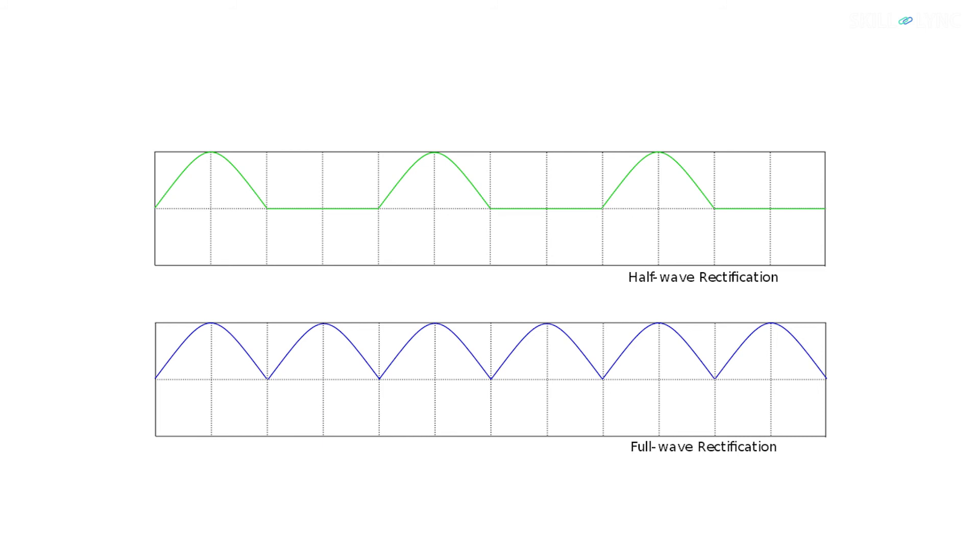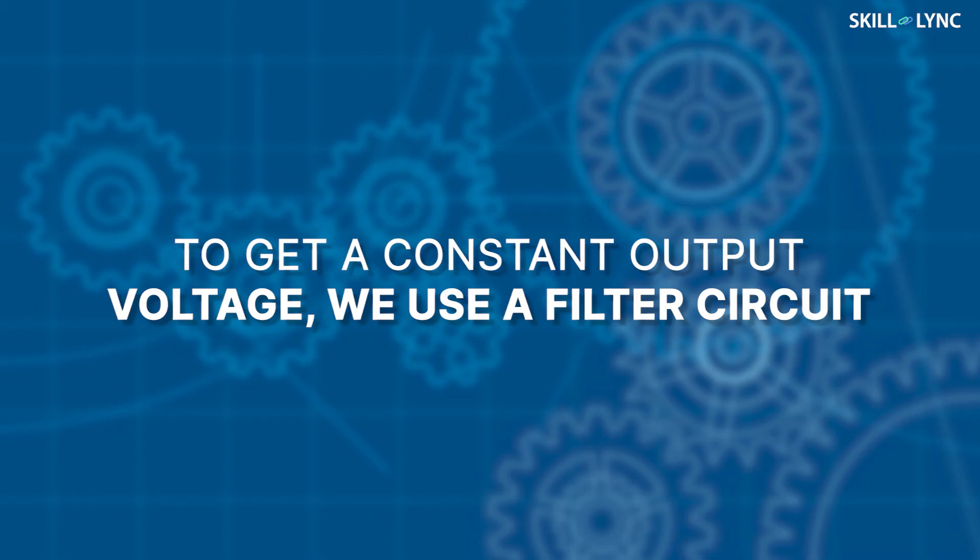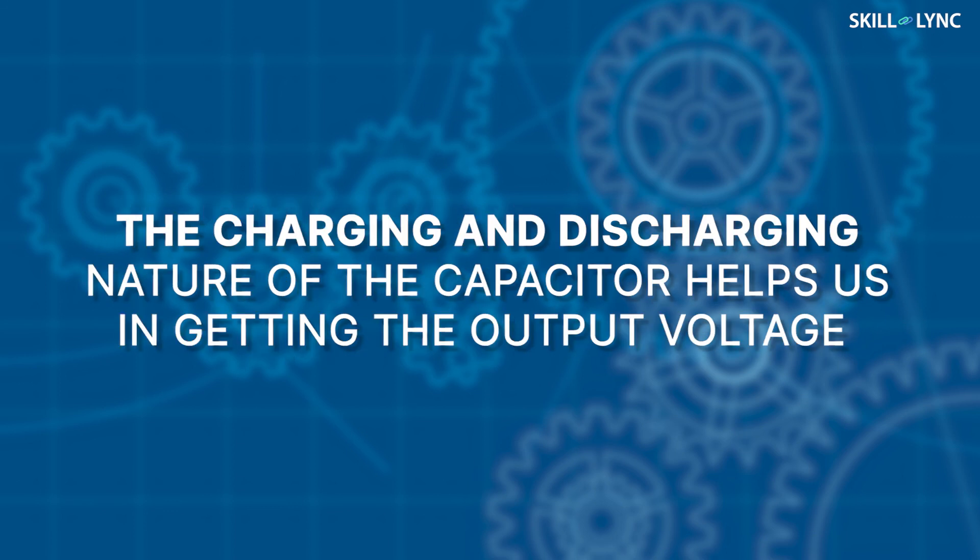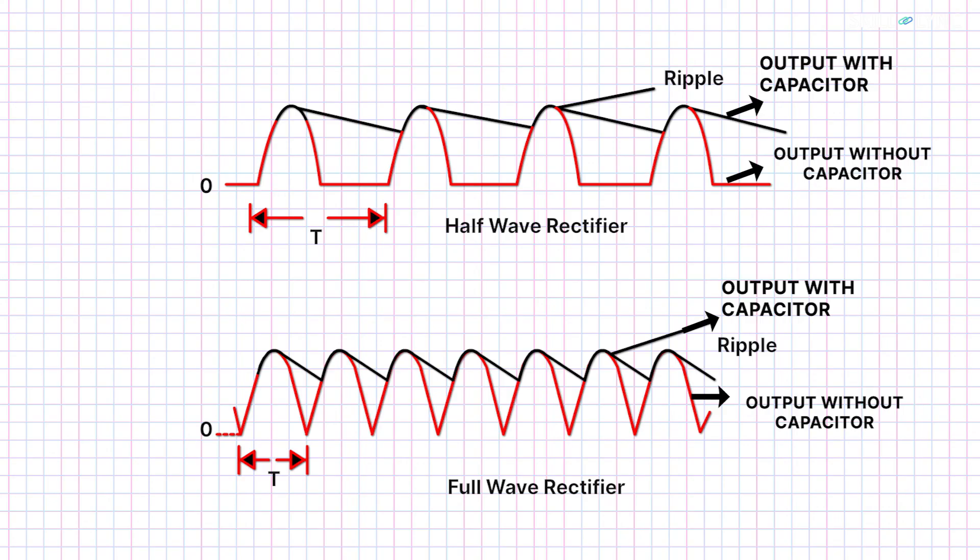The output obtained, however, is not truly DC in nature. This is because its voltage is varying. In order to get a constant output voltage, we use a filter circuit. The filter circuit is obtained by connecting a capacitor across the load. The charging and discharging nature of the capacitor helps us in getting the output voltage.